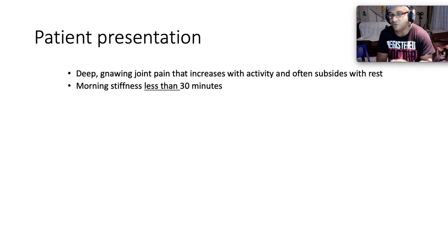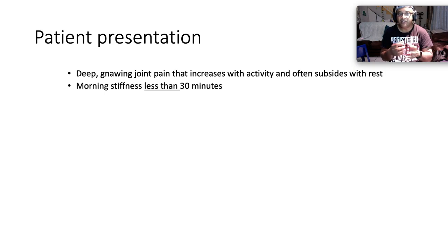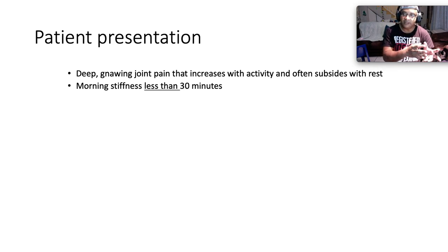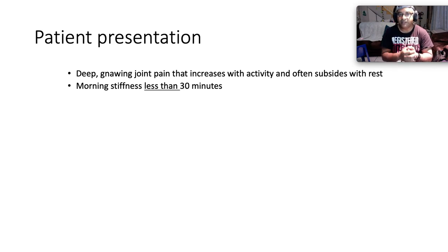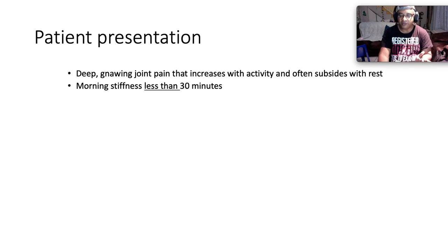Patients with OA present with a deep, aching joint pain that increases with activity and subsides with rest. Morning stiffness lasts less than 30 minutes. These two characteristics delineate mechanical arthritis from inflammatory arthritis — in inflammatory arthritis, morning stiffness is prolonged and joint pain tends to abate with activity but increase with rest, which is the opposite of OA.